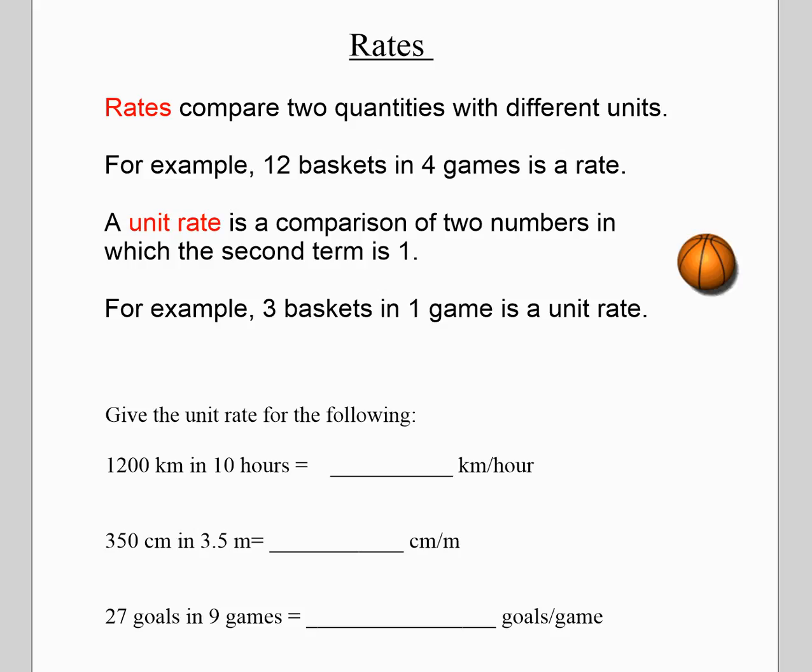A unit rate would be what one game would be. So if you score 12 baskets in four games, how many baskets would you score in one game? That would be a unit rate. Three baskets in one game is a unit rate. To get that, we just divided 12 by 4 and 4 by 4.